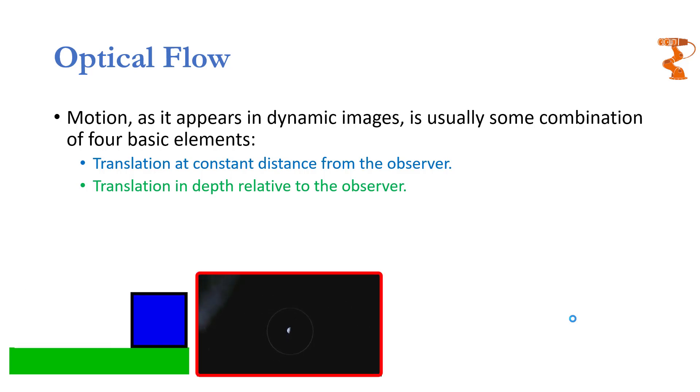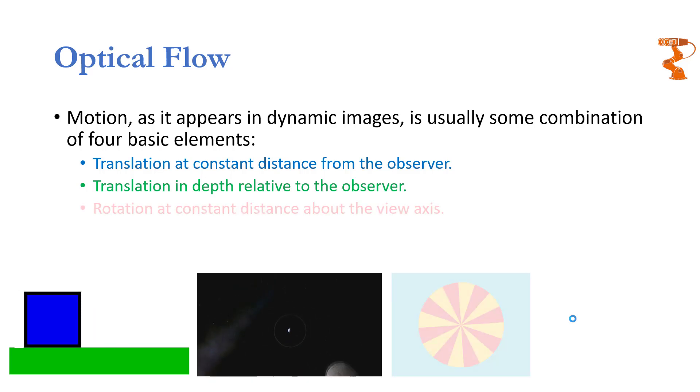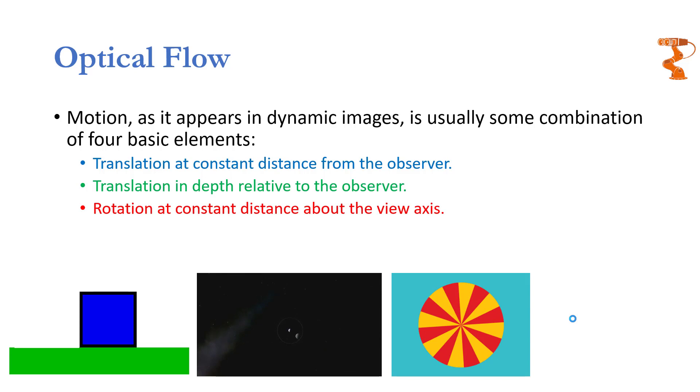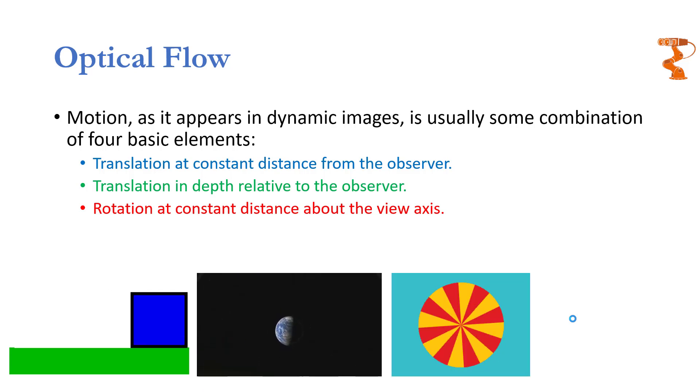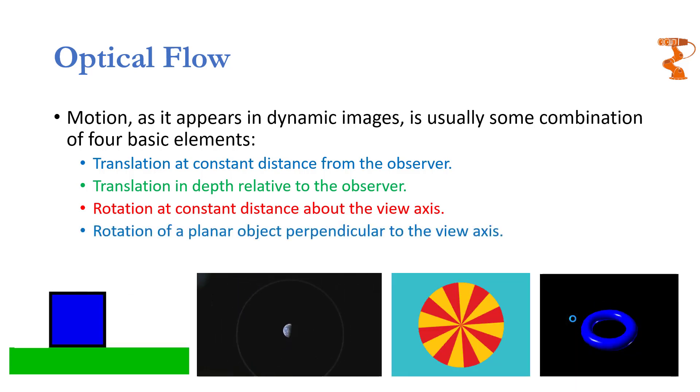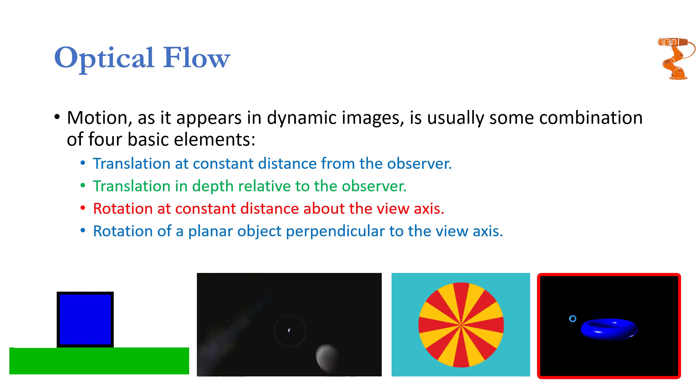For example, zooming out from earth as shown in this animation. The third type is when the object rotates at a constant distance about the viewing axis. For example, a disk rotating in front of you as shown in this animation. The last one is when the object rotates about the axis perpendicular to the viewing axis as shown in this animation.